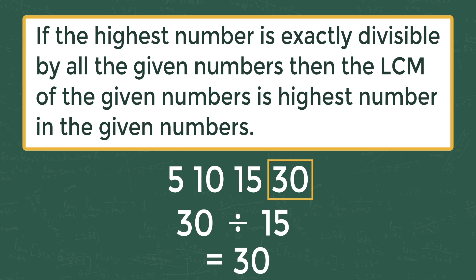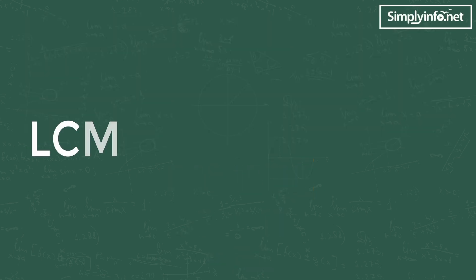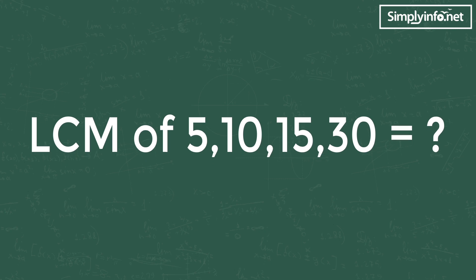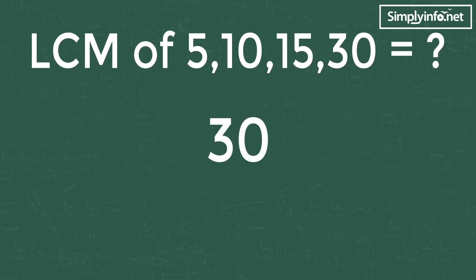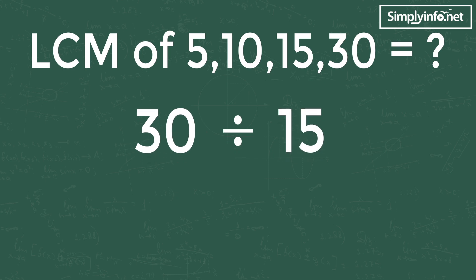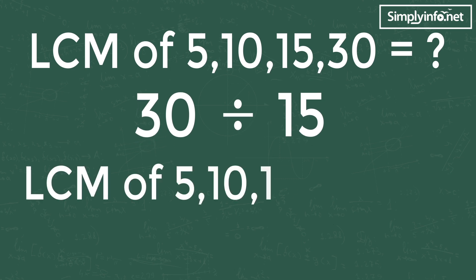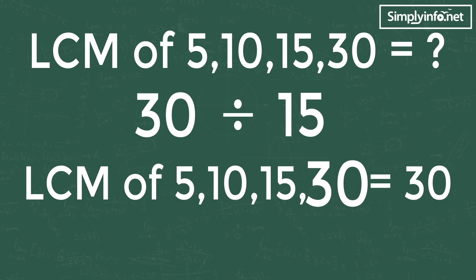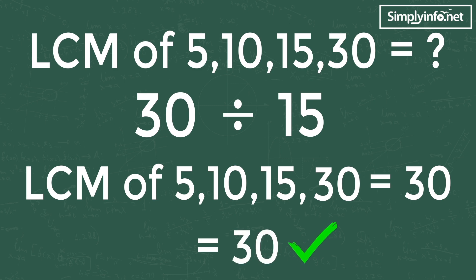Let's solve the first problem: LCM of 5, 10, 15, 30 is equal to what? Trick 1 can be applied here, as the highest number 30 is exactly divisible by all the given numbers — 5, 10, and 15. So the LCM of 5, 10, 15, 30 is 30, because 30 is the highest number in the given numbers. The answer is 30.